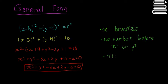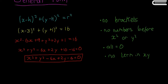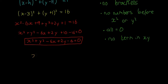Also, we set everything equal to 0, and there should be no term in xy — x and y can't be multiplied by each other; x and y have to be totally separate. The general form of the circle is: x squared plus y squared plus 2gx plus 2fy plus c is equal to 0.